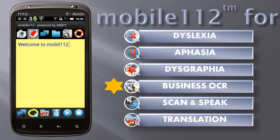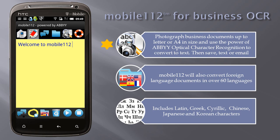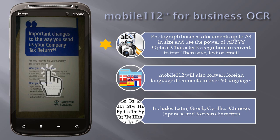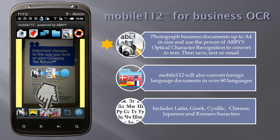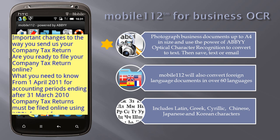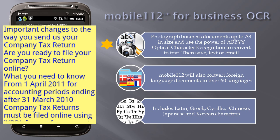Mobile 112 Business OCR. Photograph business documents up to letter or A4 in size and use the power of ABBYY Optical Character Recognition to convert to text. Then save, text, or email. Switch to the OCR tab, tap the camera button, tap anywhere on the screen to take the picture, then tap the OCR button. The photo is quickly converted to text and spoken. You can then save the text, send in an email or SMS text message, or share with any other app on your phone or tablet.